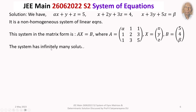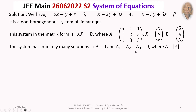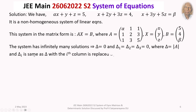The system having infinitely many solutions implies that delta equals 0, and delta₁ equals delta₂ equals delta₃ equals 0, where delta is the determinant of the coefficient matrix, and delta_i is the same as delta with the i-th column replaced by the column vector B.